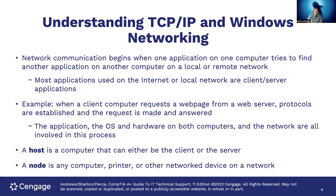Understanding TCP/IP and Windows networking: network communications begin when one application on one computer tries to find another application on another computer on a local or remote network. Most applications used on the internet or local network are client-server applications. An example is when a client requests a web page from a web server — protocols are established, the request is made and answered. The application, the OS, and hardware on both computers and the network are all involved. A host is a computer that can be either the client or the server, and a node is any computer, printer, or network device on a network.